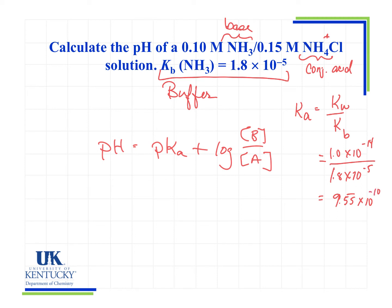There's the Ka. So now we're ready to calculate the pH. pH is pKa. That would be the negative log of that 9.55 times 10 to the minus 10 plus the log. Now which one was the base? The base was the NH3, and it's 0.10 divided by 0.15.